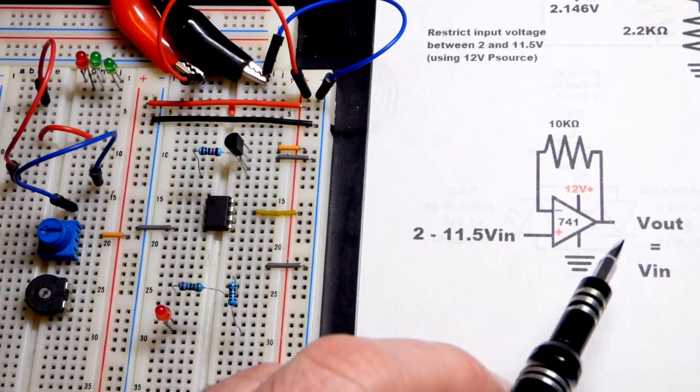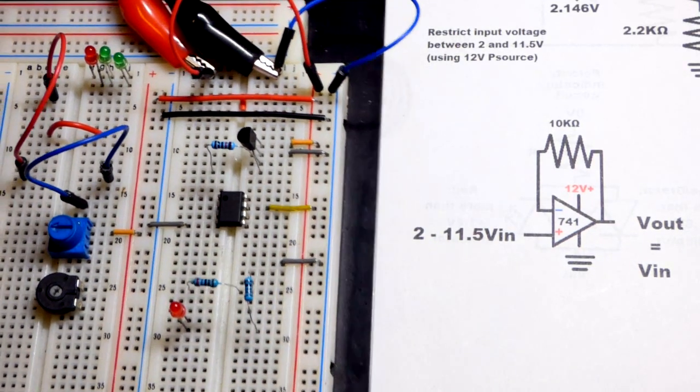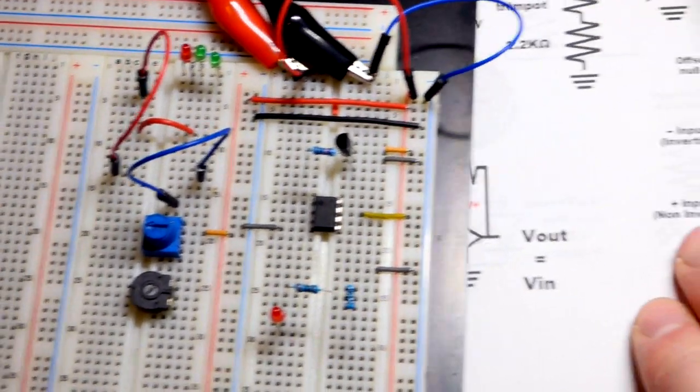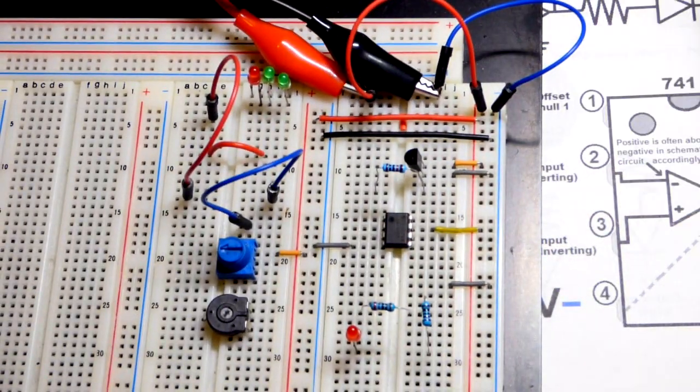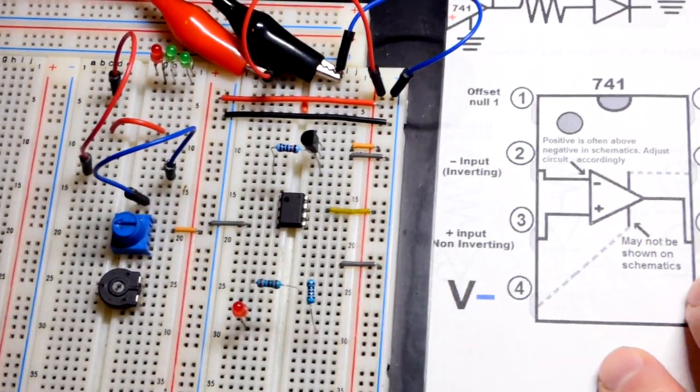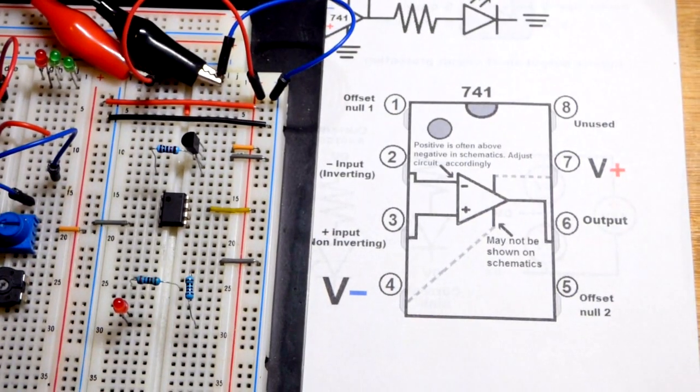Otherwise it just goes out of control, which may be what you want with a comparator. You just want it to go to either extreme when one is slightly higher than the other with a comparator.